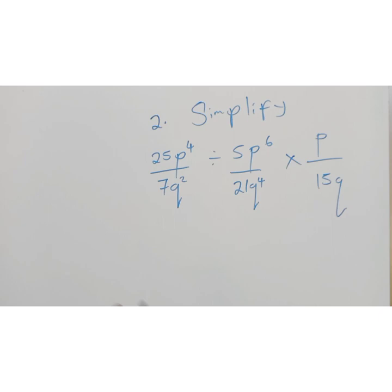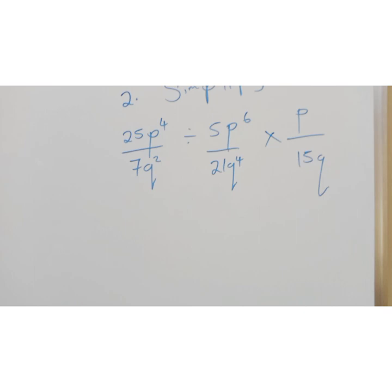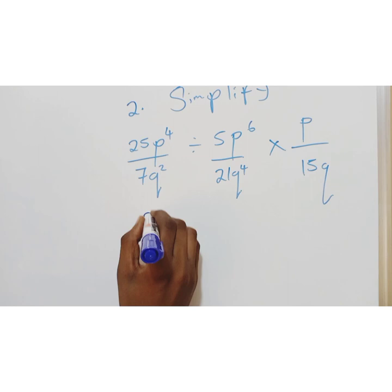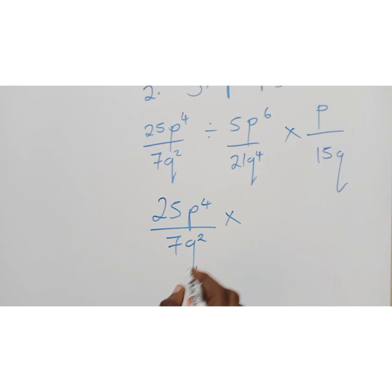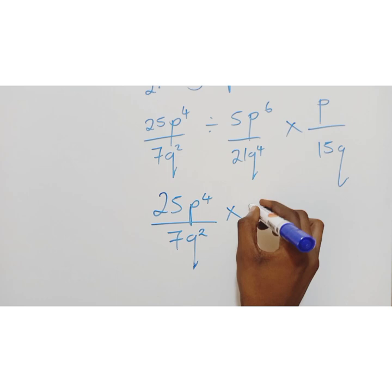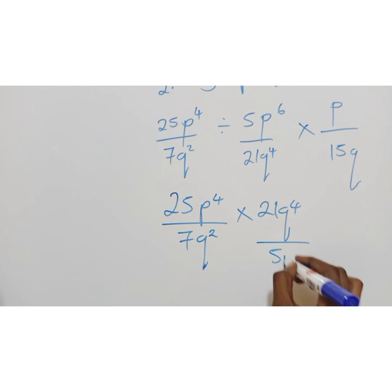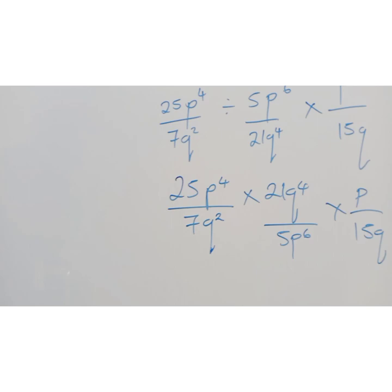Let's look at example 2. Simplify this. You see how big this is. So the key here is division. What I'll do firstly is say 25p to the power 4 over 7q, q squared. Then I'll change this to multiplication. Once I change this to multiplication, numbers reciprocate. So this 21 will go up. This will be 21 q to the power 4 over 5p over 6 times p over 15 q.